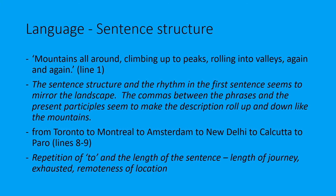Now let's look at some language points. The first line is brilliant: 'Mountains all around, climbing up to peaks, rolling into valleys again and again.' There's a real rhythm to it - you get these four chunks to the sentence. The sentence structure and rhythm seem to mirror the landscape. The commas between the phrases and the present participles 'climbing' and 'rolling' make the description roll up and down like the mountains themselves. It's a brilliant example of a sentence where the structure mirrors what she's describing.